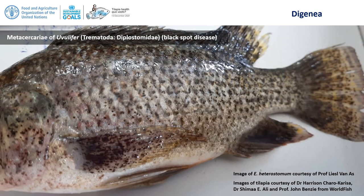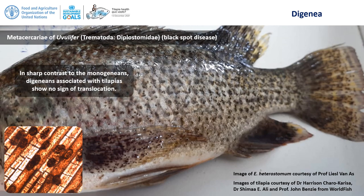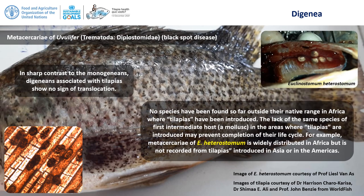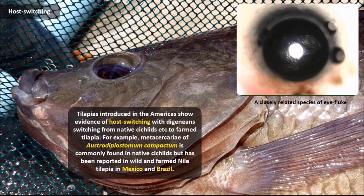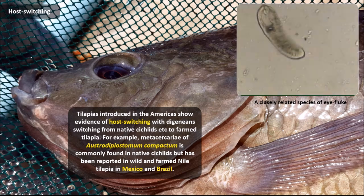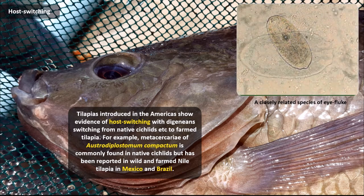Moving on to the digenia — an important class of parasite which includes many species that can infect man if we eat raw or undercooked fish. This slide shows a tilapia from Africa infected with metacercarial stages of a digenian called Uvulifer, which can cause slow growth, deformities and increased mortality in freshwater fish. The good news is that because digenians have complicated multi-stage life cycles, no species of digenian have been found outside their native Africa. However, we have seen some digenian species switching hosts — for example in Mexico and Brazil, Ostrodiplostomum compactum, commonly found in native cichlids, infects and causes serious eye problems in cultured Nile tilapia.